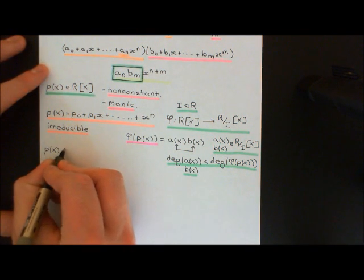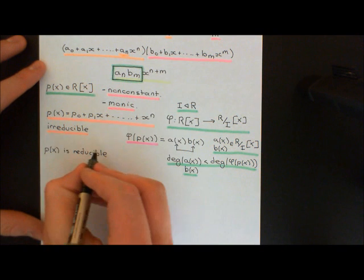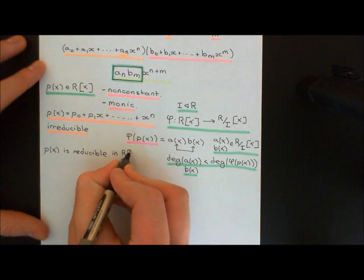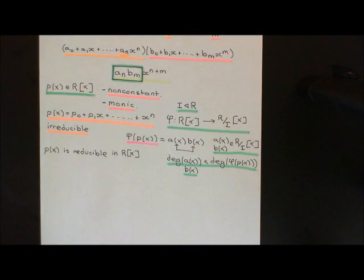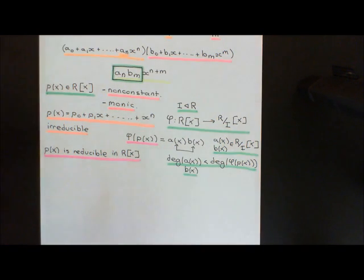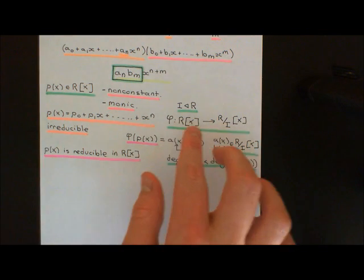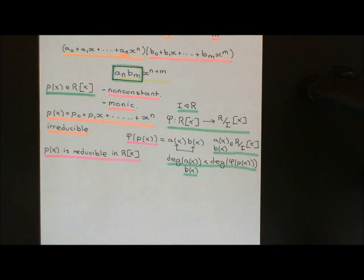Our starting assumption is that P of x is reducible in our integral domain adjoin x, this polynomial ring over the integral domain. What I want to show is that if it's reducible in here, then it is always possible to take it modulo an ideal, map it into our quotient ring R quotiented out by I adjoin x, and then split it into two polynomials of smaller degree. It's always possible to write it as two polynomials of smaller degree multiplied together in this new polynomial ring modulo that ideal.